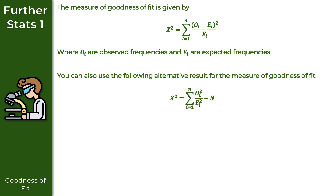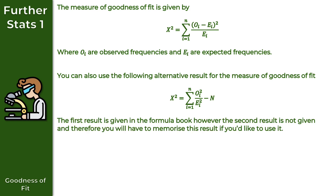You can also use the following alternative result for the measure of goodness of fit. Again, x-squared, our chi-squared value, is equal to the summation from i equals 1 to n of the observed value squared divided by the expected value, and then we subtract n, where n is our sample size. It is worth pointing out that the first result is given in the formula book; however, the second result is not, and therefore you will have to memorize it if you'd like to use it.